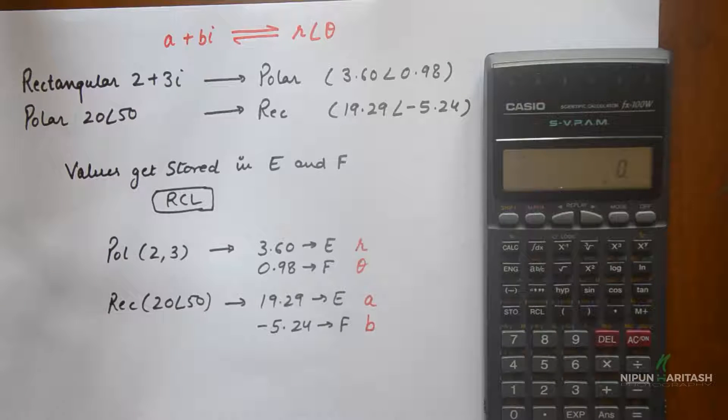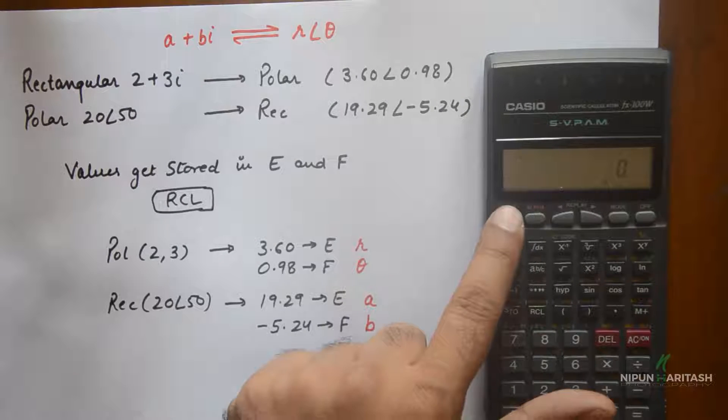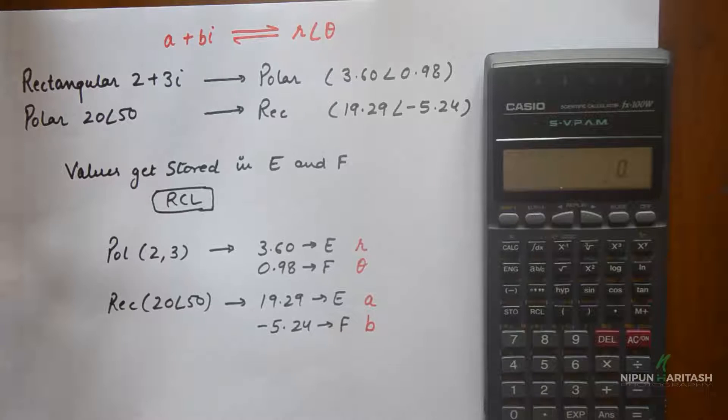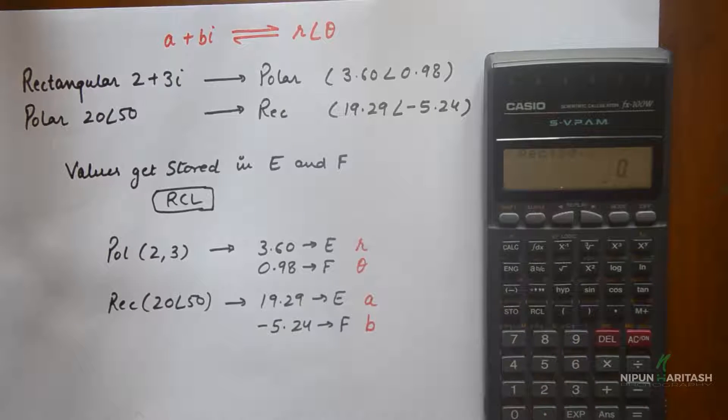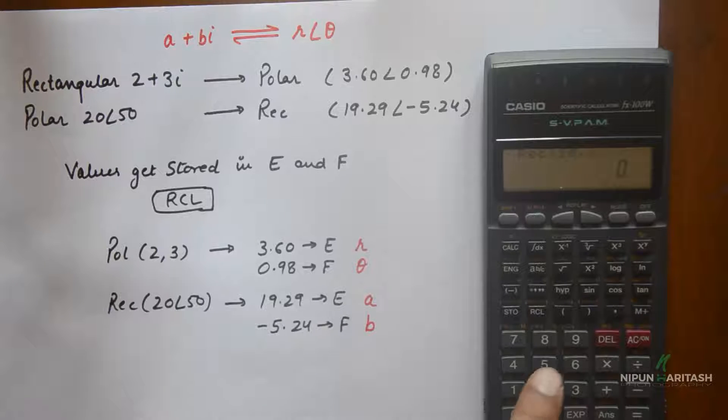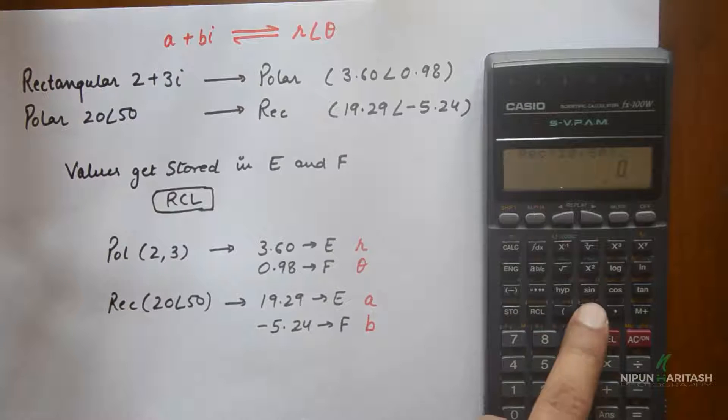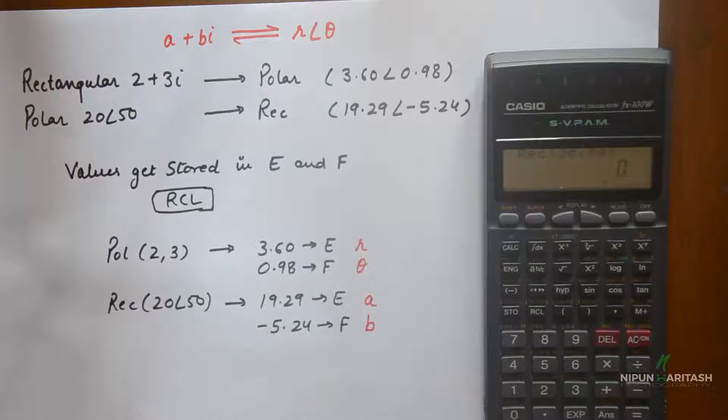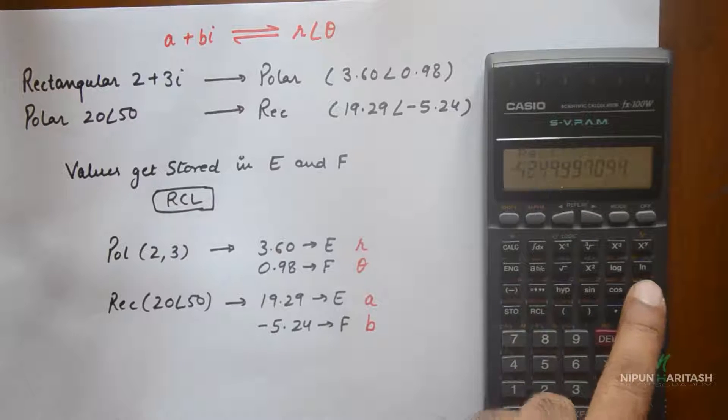How can you do that? You press shift, then rectangular, then 20 comma. Now you specify the angle which is 50, close the brackets, press equal. Now this is the result stored in E which is the real part, which is 19.29. And if you want to see the imaginary part you can press RCL and then press F, which is minus 5.24.